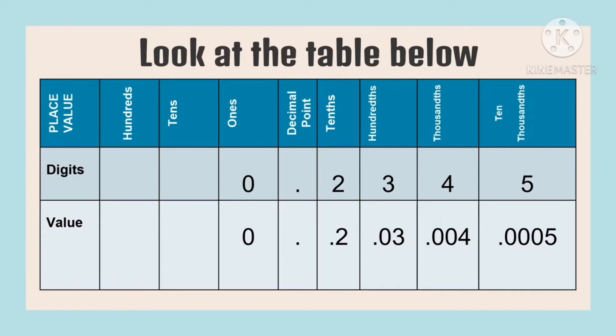Then we have zero in the tenths place. What is the value of digit four? The value of the digit four is four thousandths. You should place two zeros in front of four as the place value holder for tens and hundreds, because the place value of four is thousandths. So it needs to be in the third position.